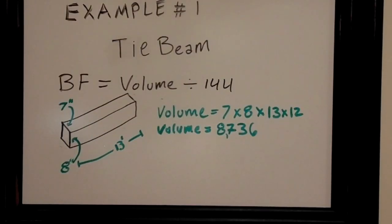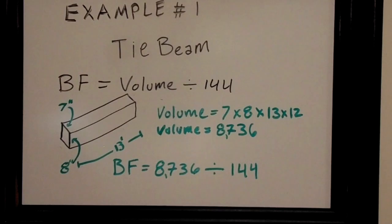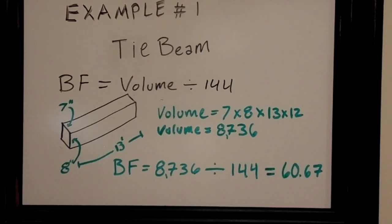The volume in cubic inches is the width, 7 inches, times the height, 8 inches, times the length in inches, which is 13 times 12. That gives us a total volume of 8,736 cubic inches. For the board footage, we take our volume, 8,736, and we divide that by 144, which is 60.67 board feet.